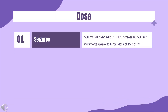Dosing for partial seizures: Vigabatrin is indicated as adjunctive therapy for refractory complex partial seizures in patients for whom the potential benefits outweigh the risk of vision loss. Initial dose is 500 mg PO Q12HR, then increased by 500 mg increments per week to a target dose of 1.5 g Q12HR. No additional benefit was shown with 6 g daily compared to 3 g daily, and higher incidence of adverse effects is associated with 6 g daily.